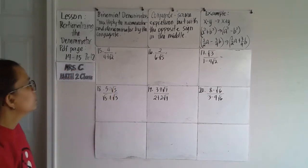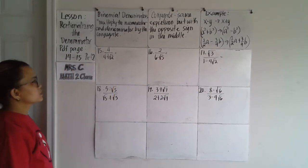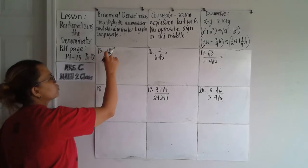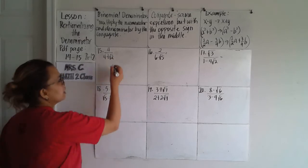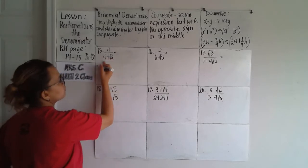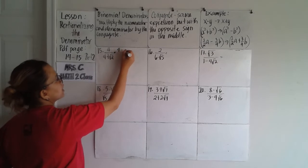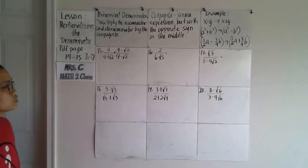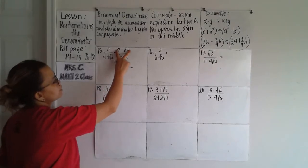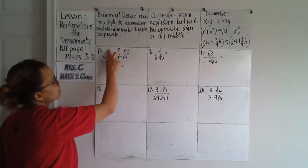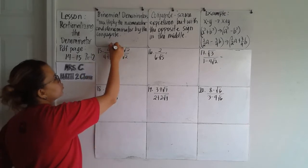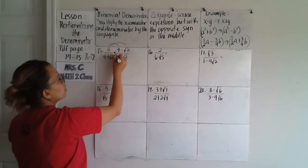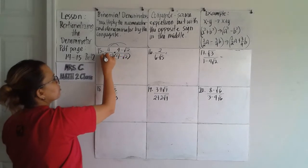Let's start with number 15: four over four plus square root of two. We need to multiply both the numerator and denominator by its conjugate. The conjugate of four plus square root of two is four minus square root of two. Since we are multiplying the numerator — a binomial — by a monomial, we need to distribute one term at a time. For the denominator, we are multiplying binomial by binomial.